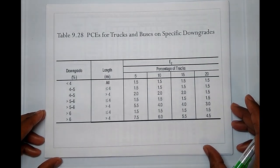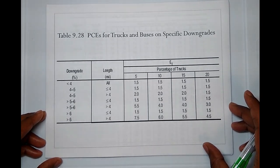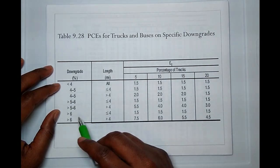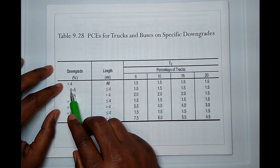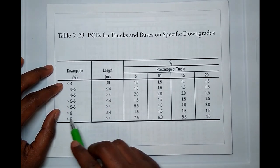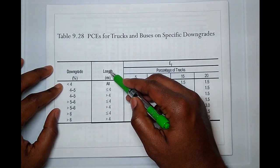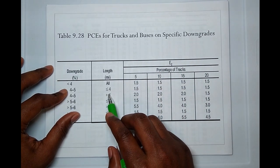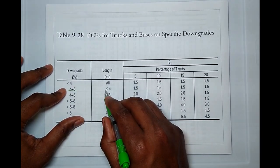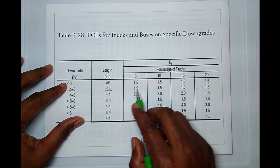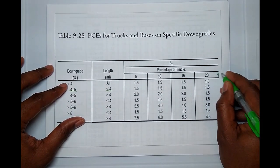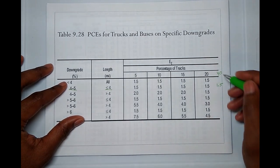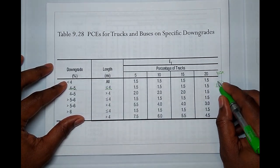Now let's figure out the equivalency factor for trucks and buses going downhill. We had a 4% grade going downhill for 1 mile. Since it's less than 4%, we check — the table has rows for 4 to 5% here. At 1-mile length and 40% trucks, looking at the downgrade table, the equivalency factor for trucks going downhill is 1.5.